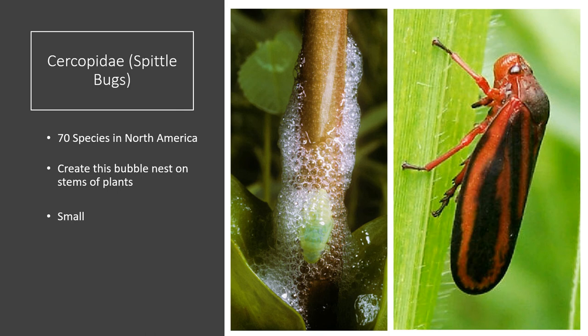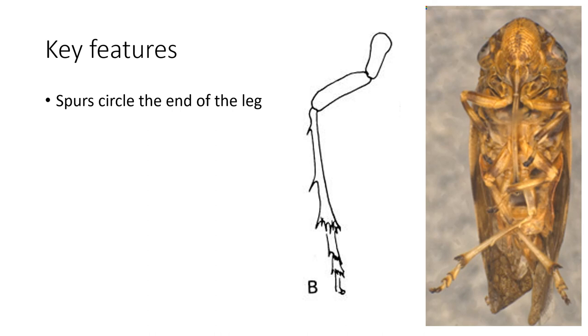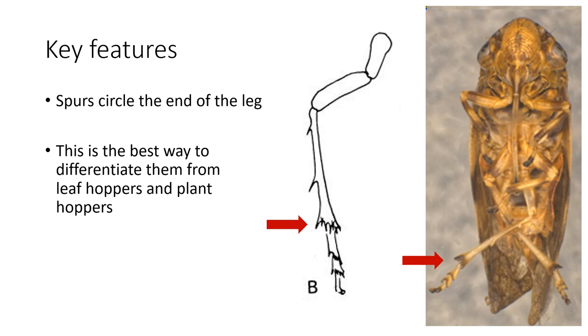Next, Cercopidae — spittlebugs — a strange family that creates a spit nest on plants to defend themselves from predators. There are 70 species in North America alone. They create a bubble nest on the stems of plants and are typically very small. Key features: they have spurs that circle the end of their legs — three rows of spurs. This is the best way to differentiate them from leafhoppers and planthoppers, which don't have this circular spur. They are small and usually hold their wings tented over their backs.